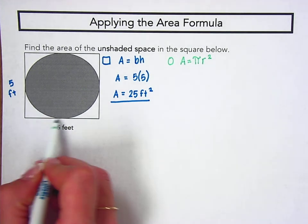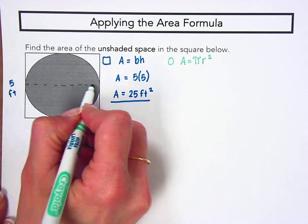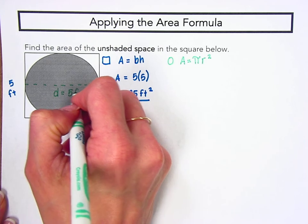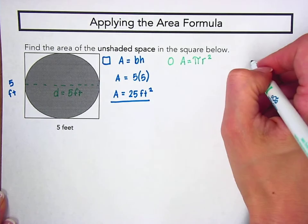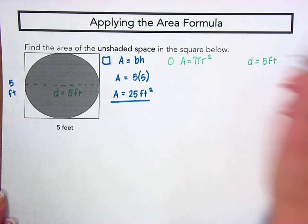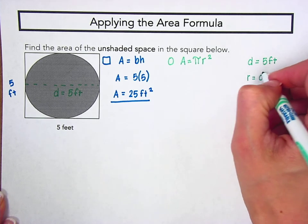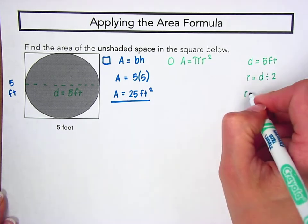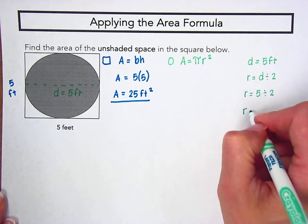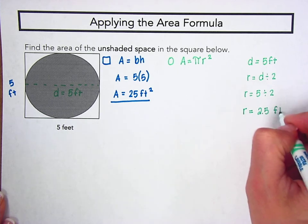If we know the base of this figure is 5 feet, we know the distance across the circle, or the diameter of the circle, is also 5 feet. So, if we know the diameter is 5 feet and we know that we need to know the radius to find the area, we can calculate the radius by dividing our diameter by 2, or in this case, dividing 5 by 2. So, the radius of our circle is 2.5 feet.